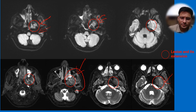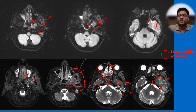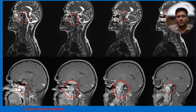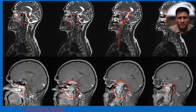There is edema in the masticator space and infratemporal fossa. There is also bilateral mastoiditis and sinusitis. So there is a mass in the nasopharyngeal region which is involving the skull base and cavernous sinus, with subsequent temporal lobe invasion. If you see carefully, this is a continuous process involving the pharyngeal region, which you are able to appreciate on contrast as well — there is direct spread of the lesion from the nasopharynx into the cranium.